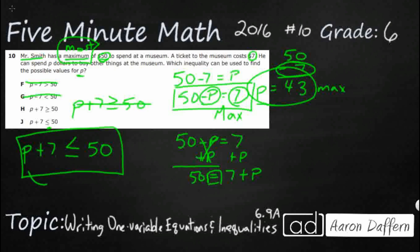Because this P, remember, that can be 43. So 43 plus 7 is less than or equal to 50. That's going to work.